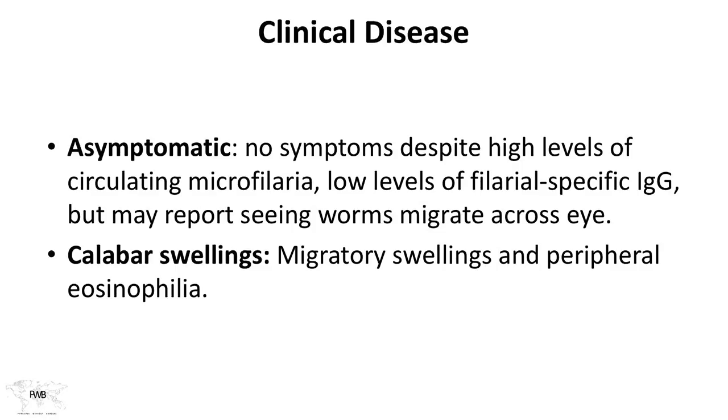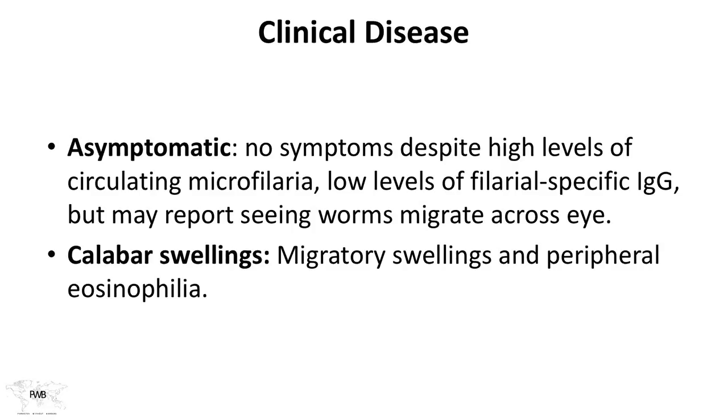Let's talk a little about clinical disease in loa loa. A lot of people are asymptomatic — they have no symptoms despite very high levels of circulating microfilaria. One thing that might happen is that the worms might migrate across the eye and be noticed when doing so. Among the symptoms we might see are Calabar swellings — these are migratory swellings that occur as an immune response. We might also see peripheral eosinophilia, more of a sign than a symptom.